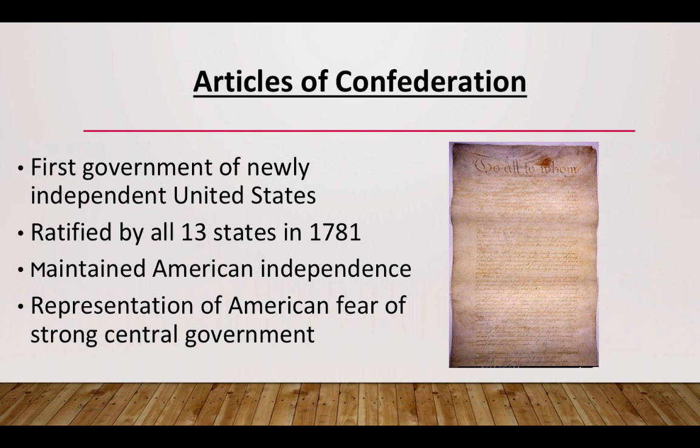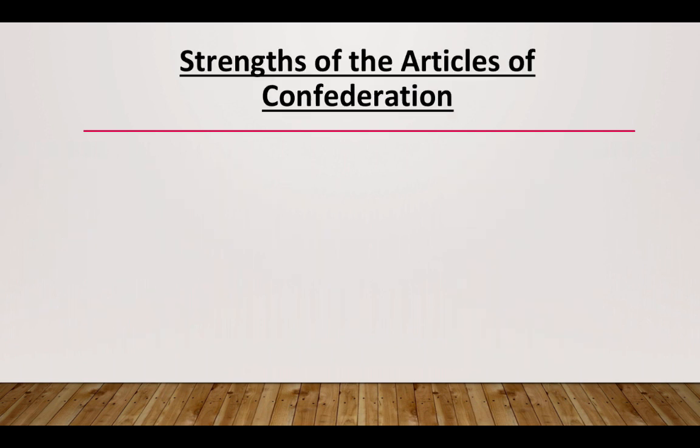As we touched on in the last video, there was such fear of King George III and a strong central government that when the founders created their first government, they decided to purposely design it very, very weak. So when studying the Articles of Confederation in the big context of American history, it's important to understand it's a weak form of central government.